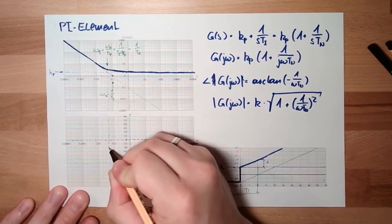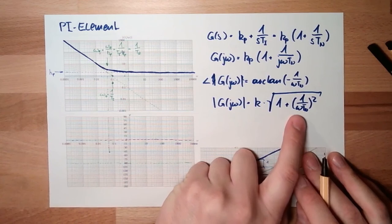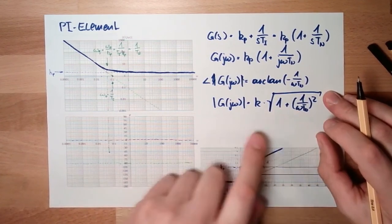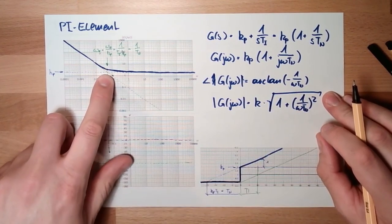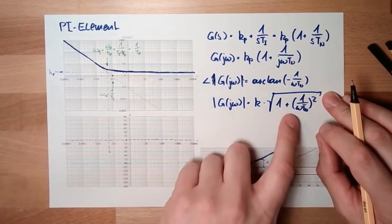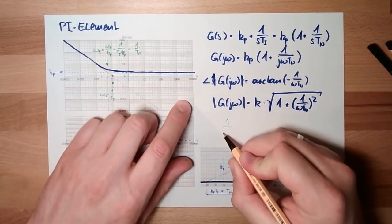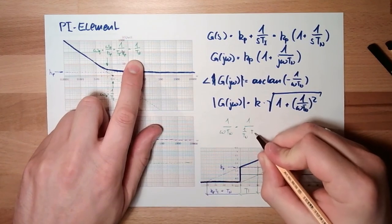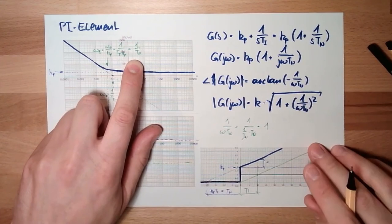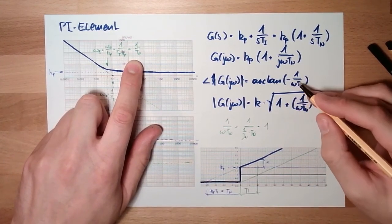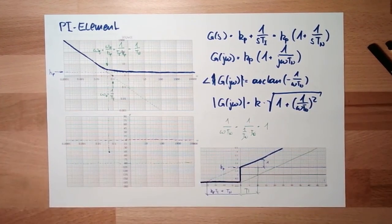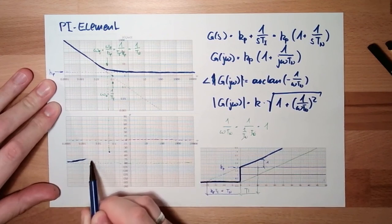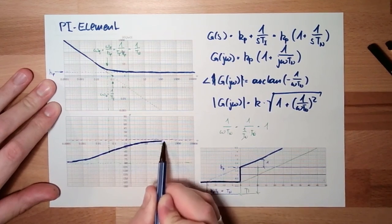What angle do we have if ω is 1 divided by tn? Then 1 divided by ω·tn becomes 1, so we get the square root of 1 plus 1 equals square root of 2 as the magnitude factor. And arctan of minus 1 is minus 45 degrees. So at low frequencies we are at minus 90 degrees like an i element, then we move up, and at high frequencies we approach 0 degrees like a p element.